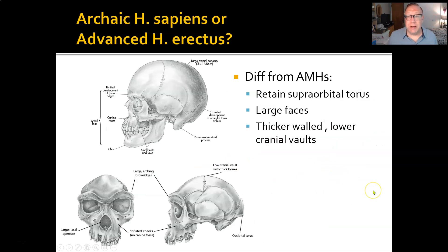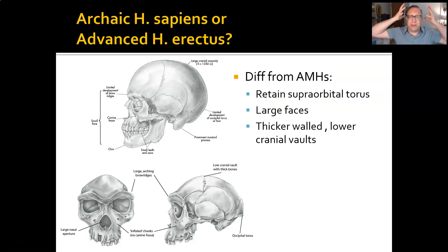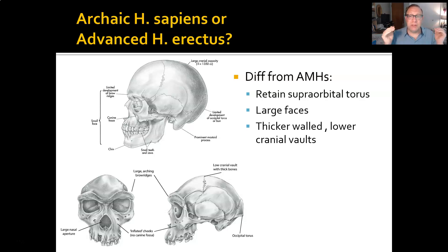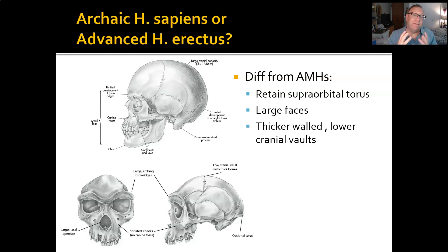In terms of differences from anatomically modern humans: modern humans take the trend in brain growth and globularization — the spherical, dome shape of the skull — even further. Archaic Homo sapiens have larger faces, thicker-walled and lower cranial vaults compared to anatomically modern humans. And very importantly, anatomically modern humans have completely, or mostly, lost their brow ridges. Those are the biggest changes — the shape and size of the cranial vault, the brow ridges, and face size.